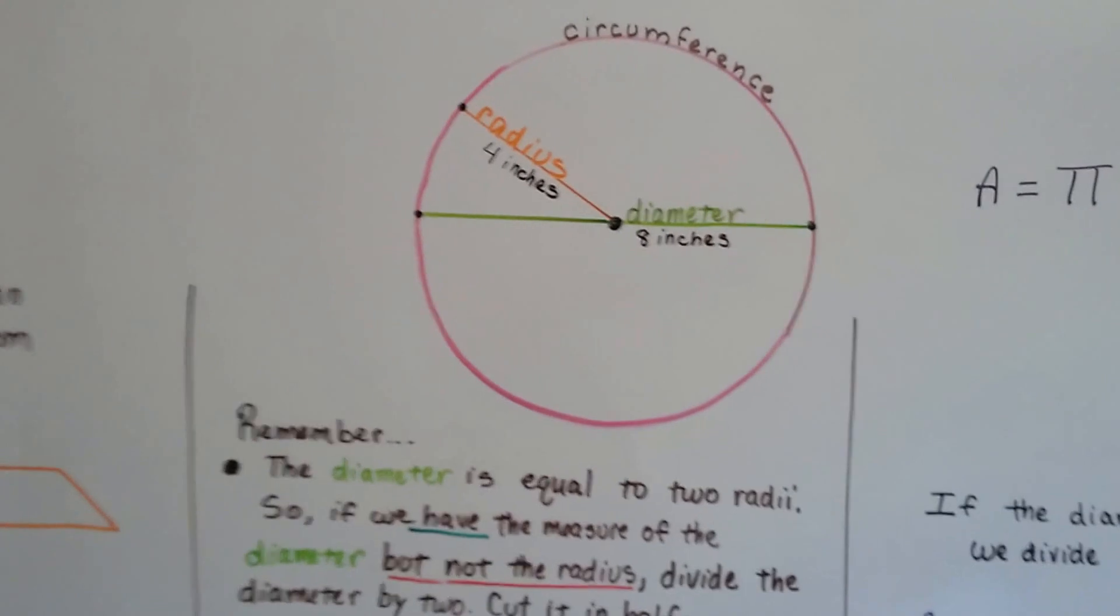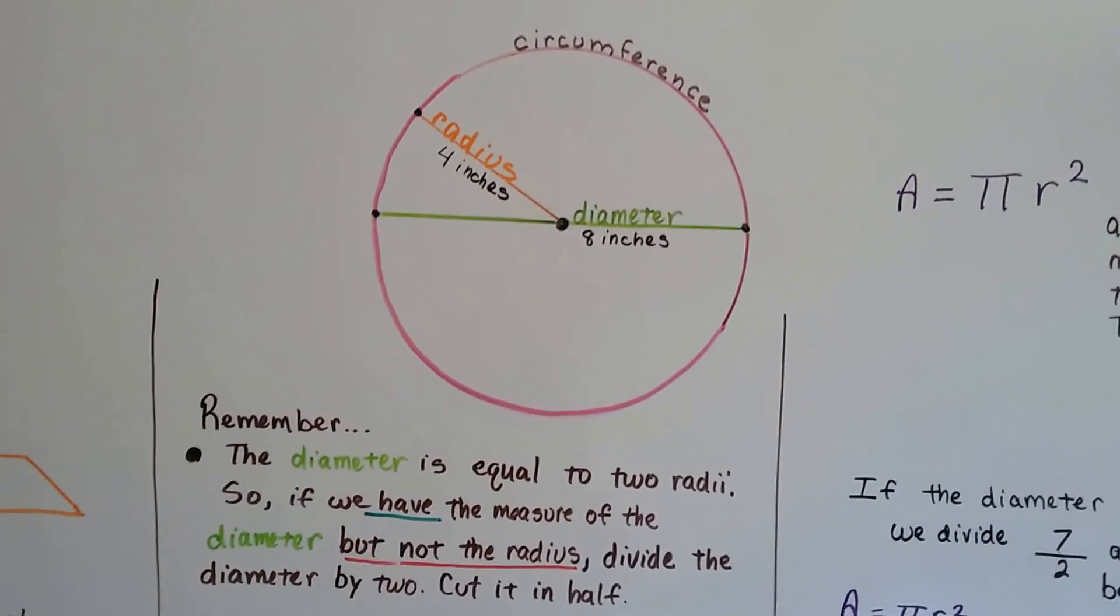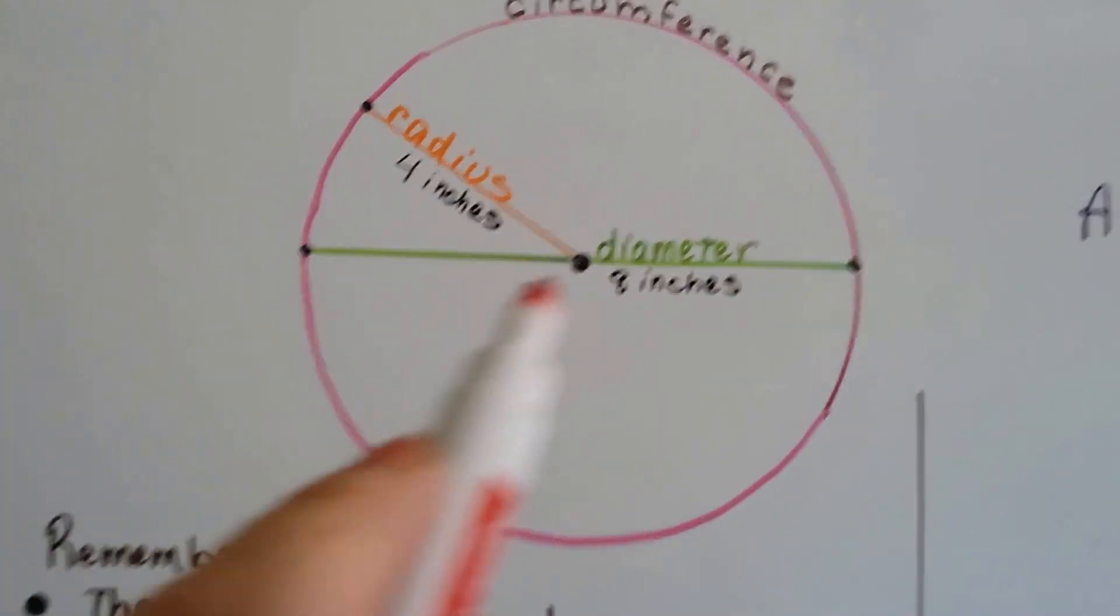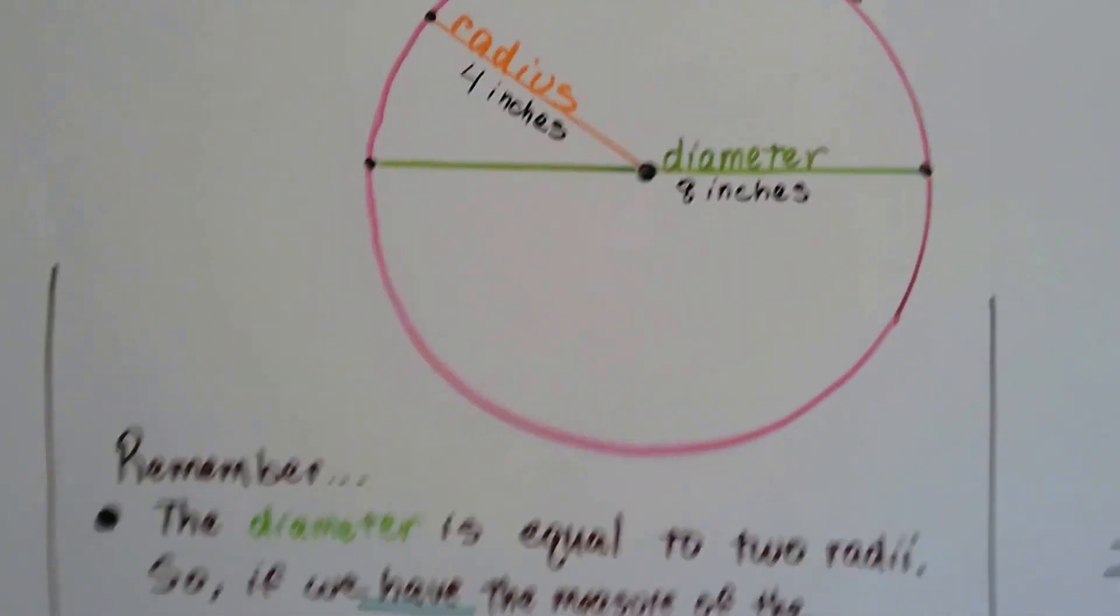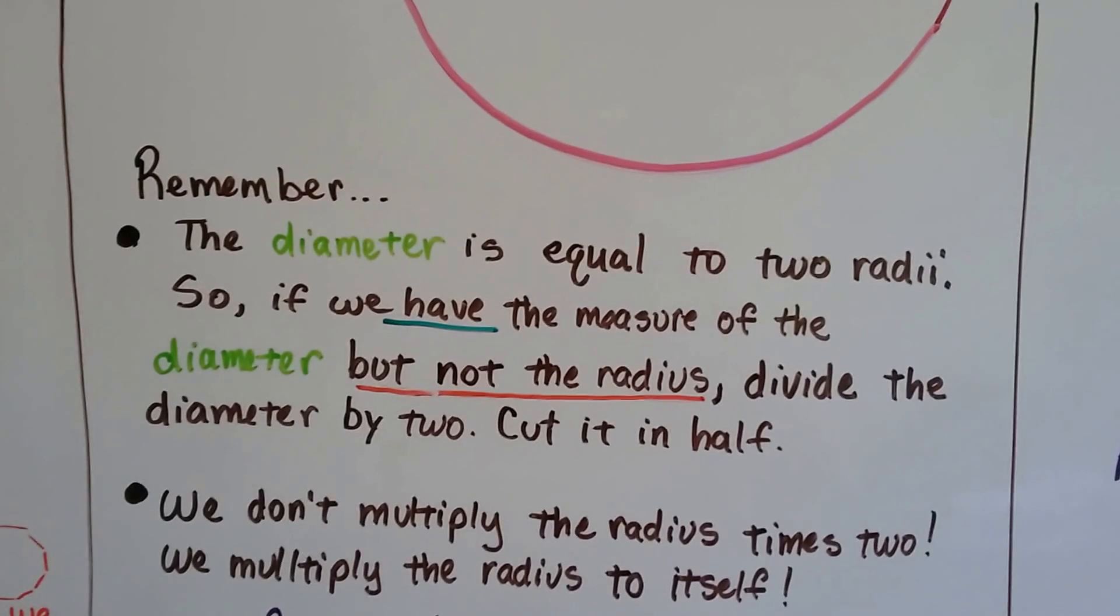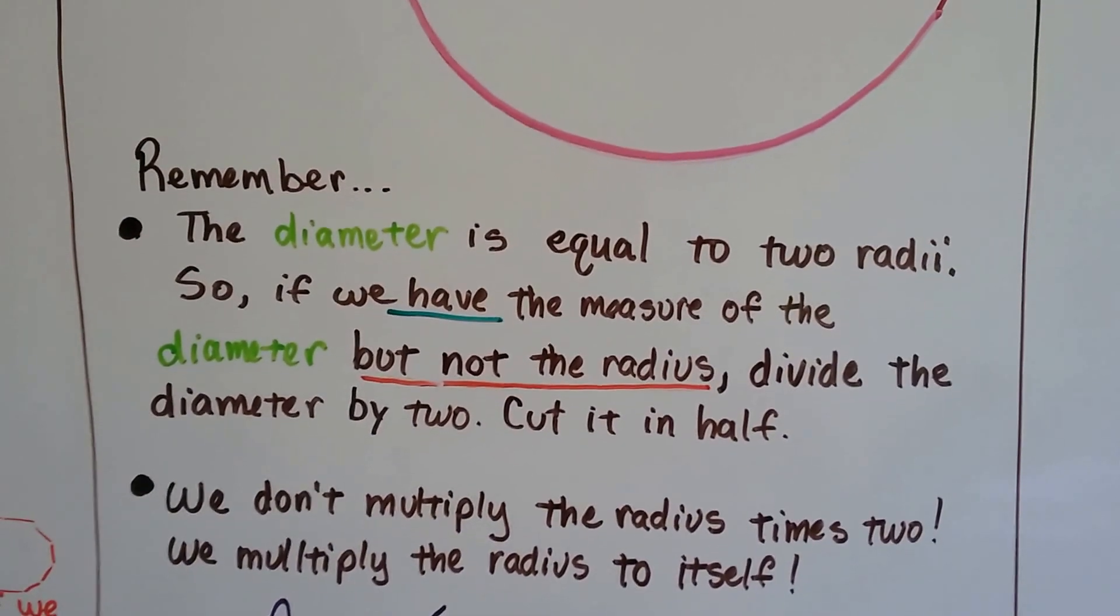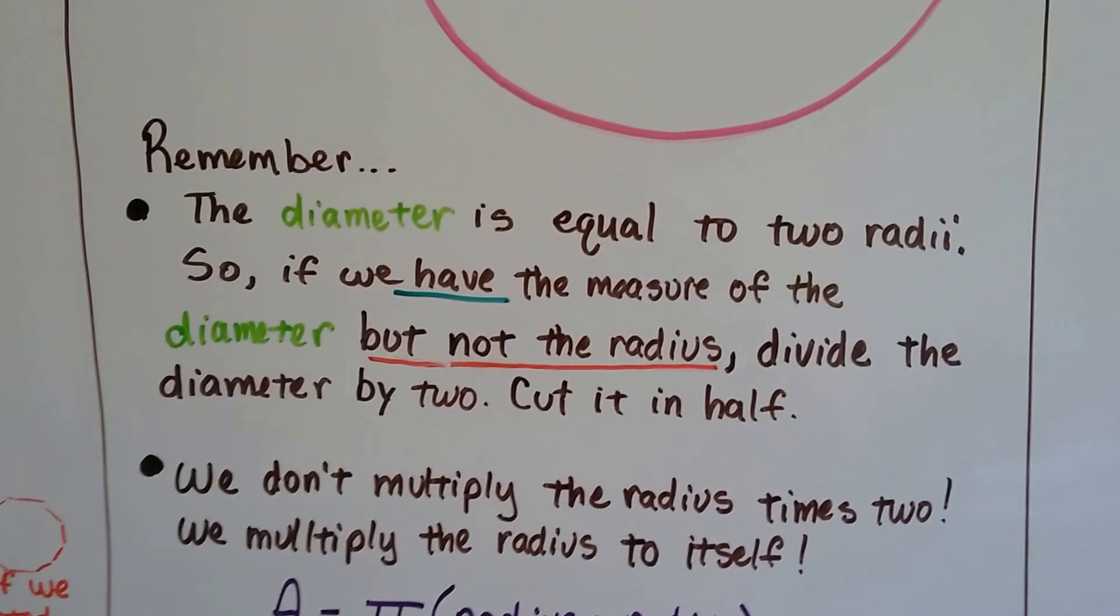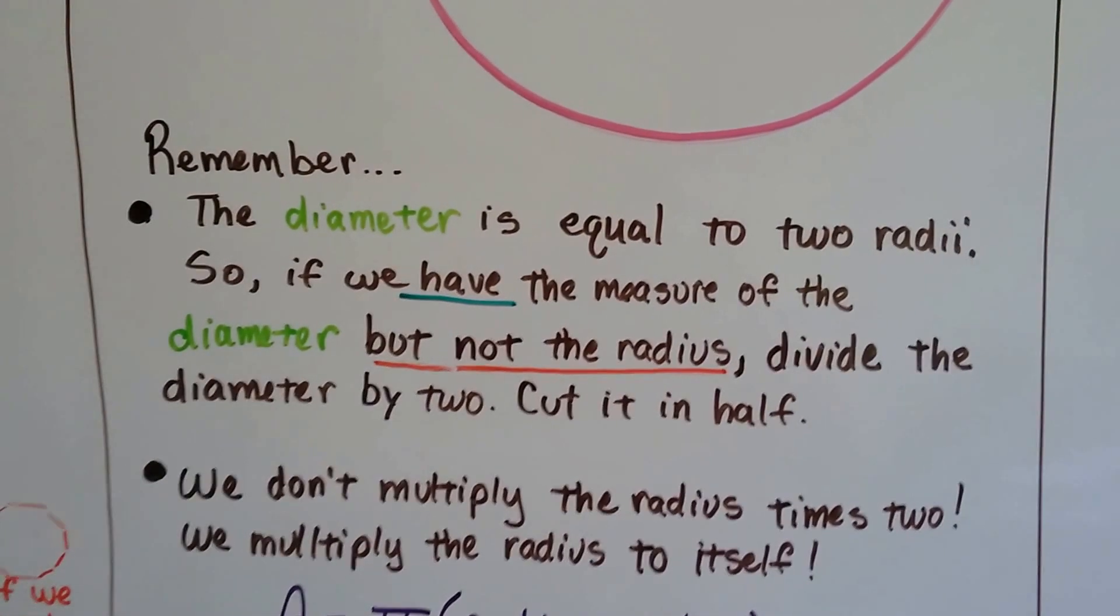Here's our pink circle that's been following us around for the last couple of videos. You can see the diameter is 8 inches, and the radius is 4. The radius is half the diameter. So remember, the diameter is equal to 2 radii. If we have the measure of the diameter but not the radius, we can just divide the diameter by 2 and cut it in half.